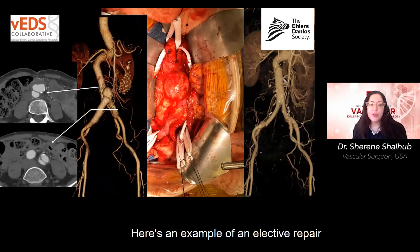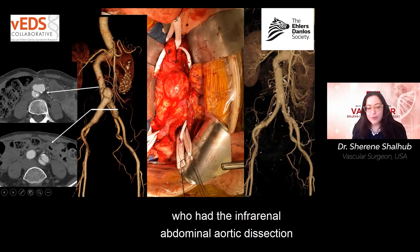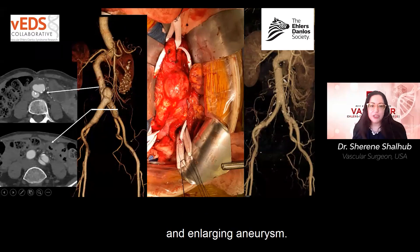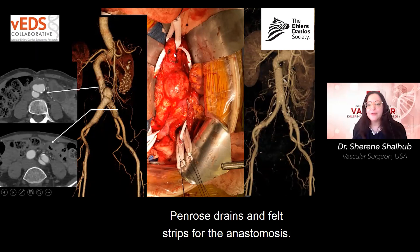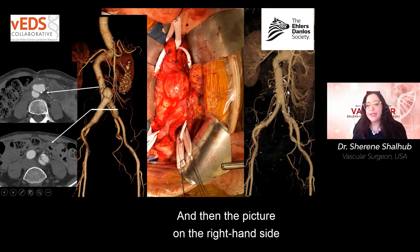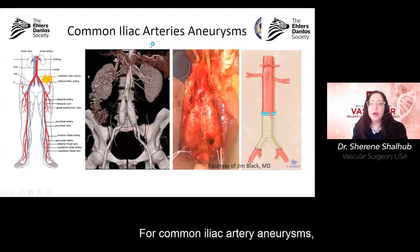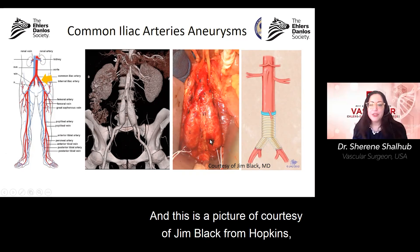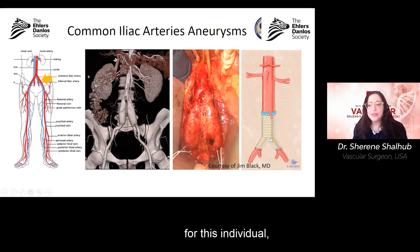Here is an example of an elective repair for an aortic aneurysm I performed on a patient with an infrarenal abdominal aortic dissection and enlarging aneurysm. The middle picture shows very gentle retraction using Penrose drains and felt strips for the anastomosis. The picture on the right shows the completed repair — she did well. For common iliac artery aneurysms, open repair is also an option, as shown in a picture courtesy of Jim Black from Hopkins.